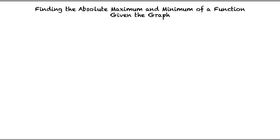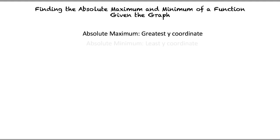This video will cover the topic of finding the absolute maximum and minimum of a function given the graph. First, we must discuss the definitions: an absolute maximum is the greatest y-coordinate of a graph function, and an absolute minimum is the least y-coordinate of the function.